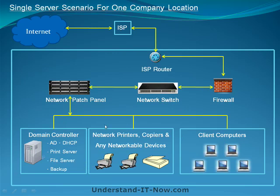Controlling the rest of your network is typically done by your domain controller, which in most cases contains Active Directory, DHCP for distributing IP addresses throughout the network, your print server, your file server, and all backups. This is pretty much how most common small businesses have their networks.